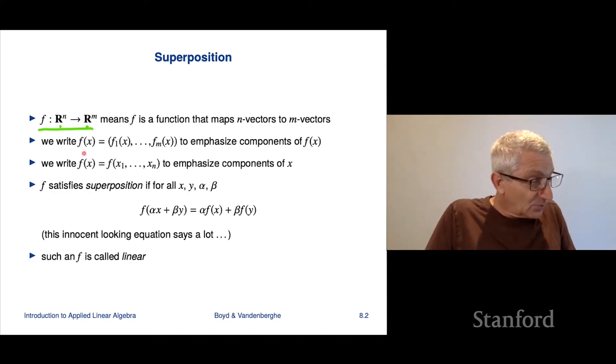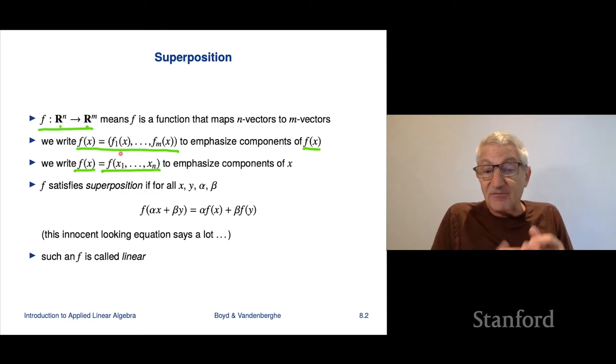Now, we can write this lots of different ways, right? So sometimes people write it this way. You could write it as the m-vector where f_1, you would say is the first component of the function f. And that's of course also a function of x. So you write it this way. And that emphasizes the components of f(x), the m different components of f(x). Now, we can also write f(x) as f of—and we can give, instead of giving a vector argument, we can give a list of scalar arguments. And that's f(x_1) up to x_n. But just so you can see to emphasize the fact that x is a vector with n components. We generally will switch between these notations without saying anything.